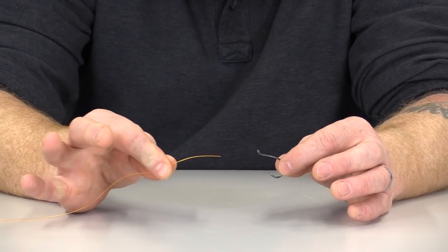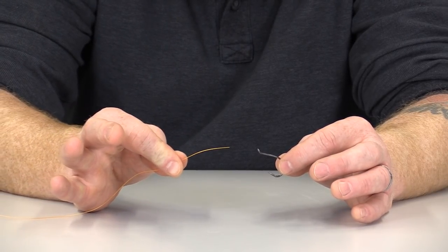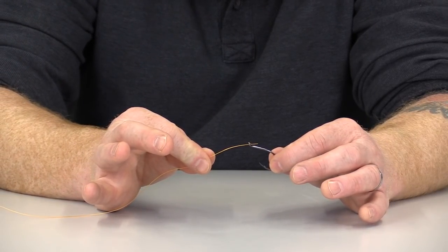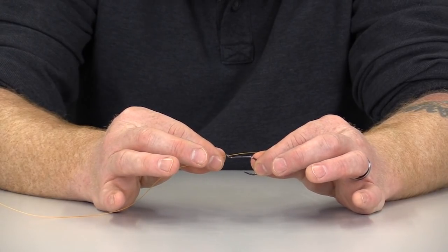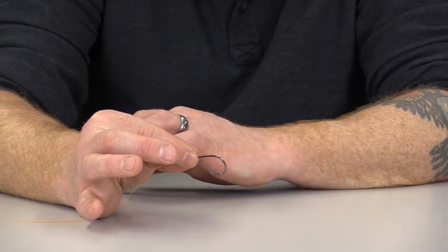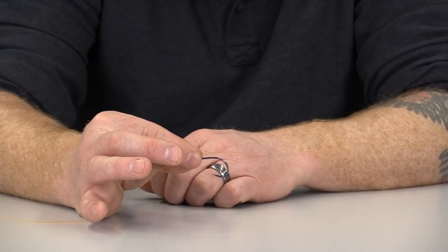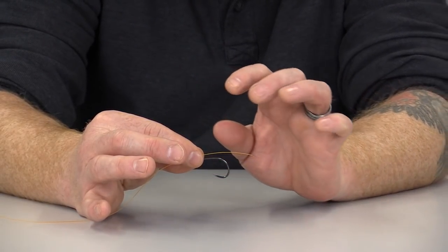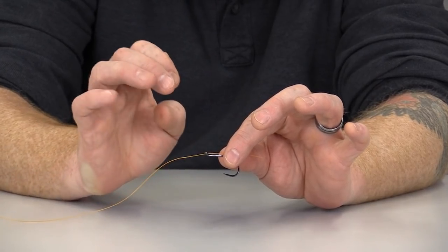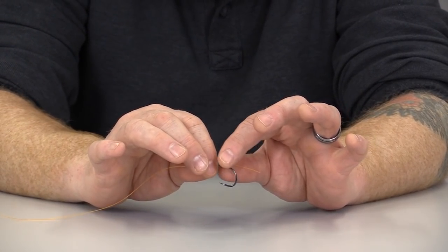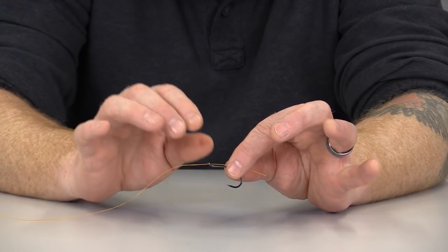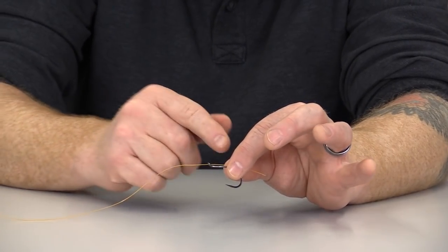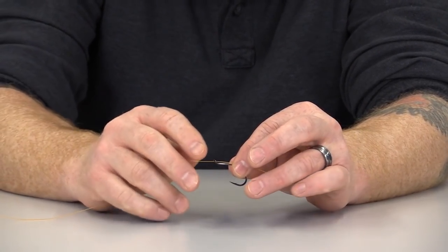We're going to take a small section of that monofilament line, and we're going to simply run it through the eye of the hook. We're going to leave a short enough section here just beyond the bend of the hook. We're going to get to that section a little bit later. But for now, we're going to transition hands. Using our left hand, we're going to use the thumb and forefinger, and we're going to pinch that down against the shank.